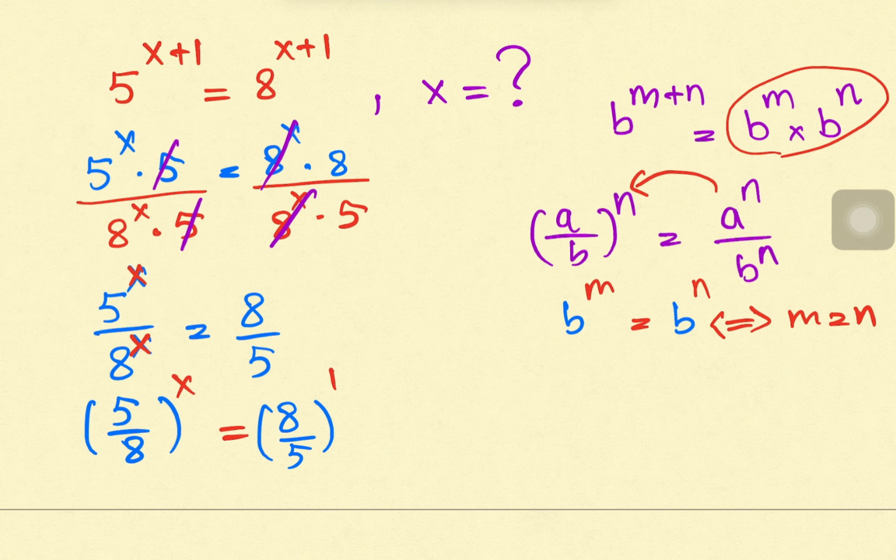The right side we can change: 5 raised to x equals 5 over 8 to the whole power negative 1.